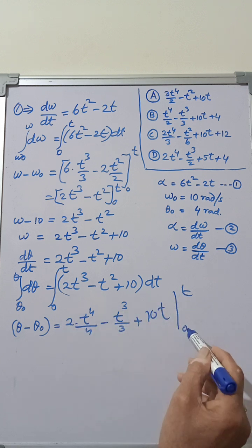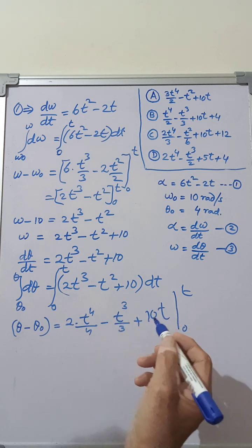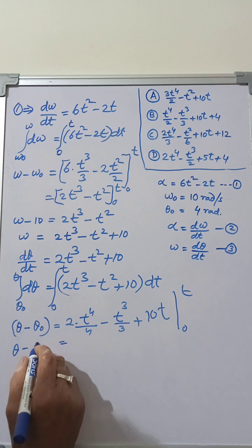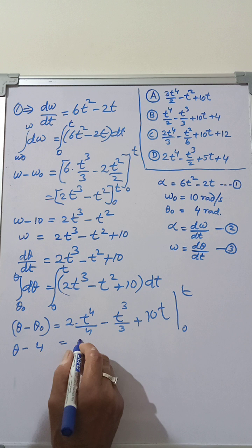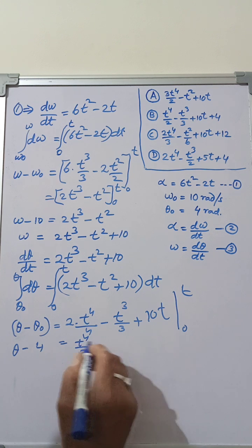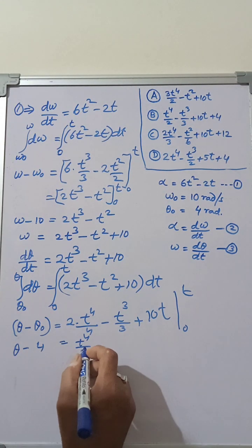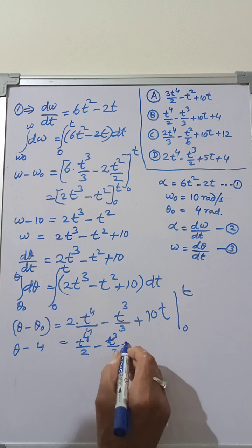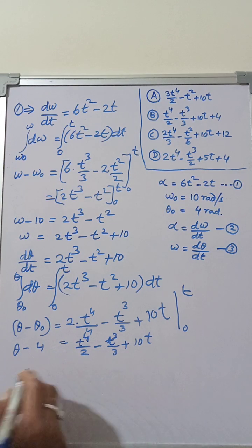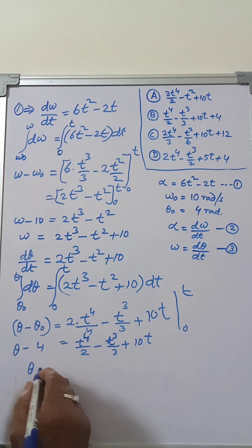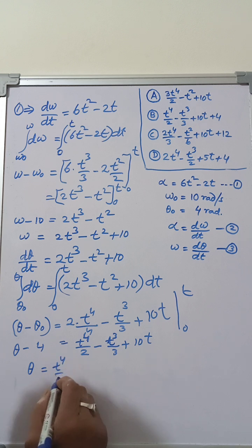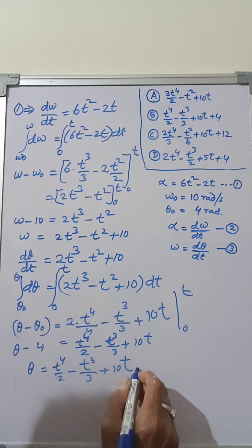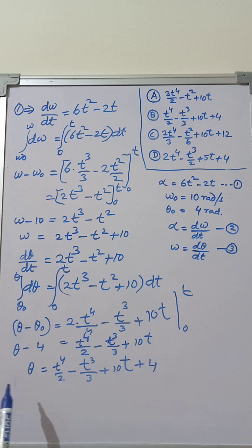Putting the upper limit t gives the expression and putting 0 gives zero. Therefore theta minus theta₀ equals t⁴/2 minus t³/3 plus 10t. Since theta₀ equals 4 radians, we get theta equals t⁴/2 minus t³/3 plus 10t plus 4. This is the expression for angular position.